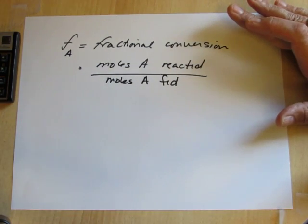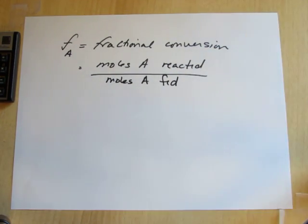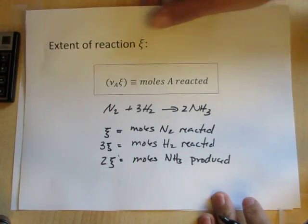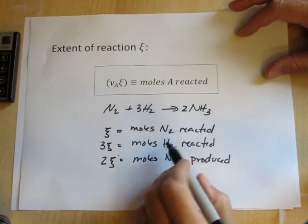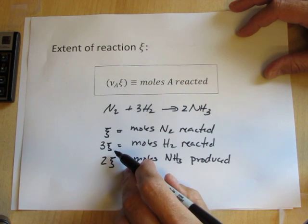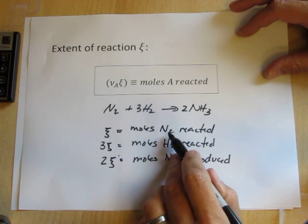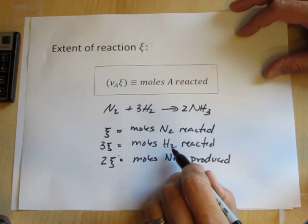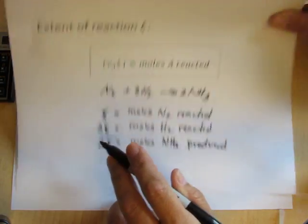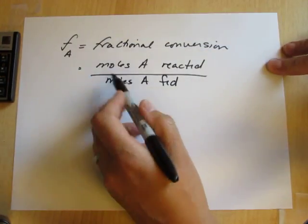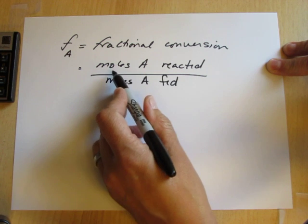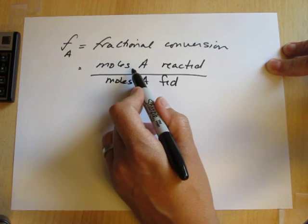If we go back to looking at the extent of reaction, we see that the moles of the species reacted is something that's very nicely expressed with the extent of reaction. So whether we're looking at fractional conversion of nitrogen or hydrogen, the extent of reaction is going to help us write the fractional conversion very nicely in terms of how often the reaction goes.